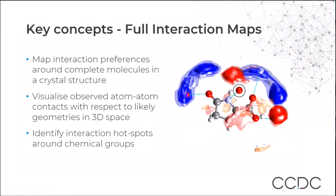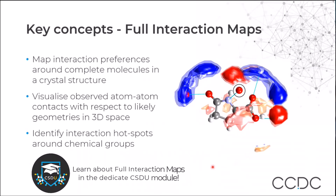The first concept is interaction maps. These are derived from knowledge bases in the CSD and used to understand the intermolecular interaction preferences around a molecule. You can see for our central molecule here where we'd expect to see a hydrogen bond donor — highlighted in these blue blobs, these blue clouds. The red clouds indicate where we'd expect to see a hydrogen bond acceptor. These diffuse orangey-brown clouds are the hydrophobic areas we'd expect to see around it.